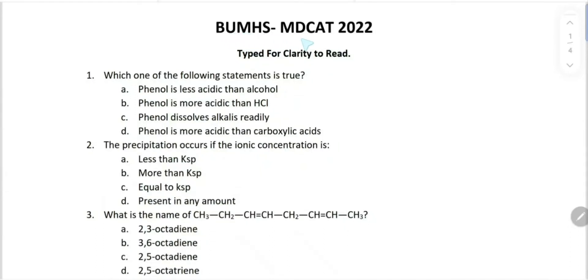Bolan University of Medical and Health Sciences MDCAT 2022 Chemistry. First question: which of the following statement is true? Phenol is less acidic than alcohol - yes, this is true. So the choice is straightforward: A. Phenol is more acidic than HCl - false. Phenol dissolves in alkali readily - false. Phenol is more acidic than carboxylic acid - it is false.